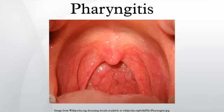A number of different bacteria can infect the human throat. The most common is Group A Streptococcus; however, others include Streptococcus pneumoniae, Haemophilus influenzae, Bordetella pertussis, Bacillus anthracis, Corynebacterium diphtheriae, Neisseria gonorrhoeae, Chlamydophila pneumoniae, and Mycoplasma pneumoniae.